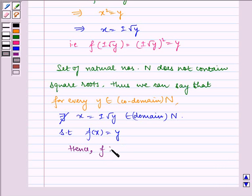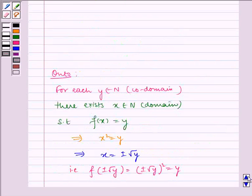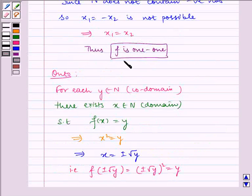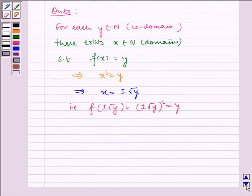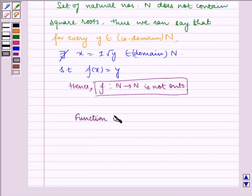Hence, function f from N to N is not onto. Now, since the function f is one-one and f is not onto, therefore, function is injective but not surjective.